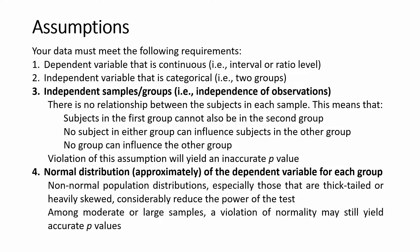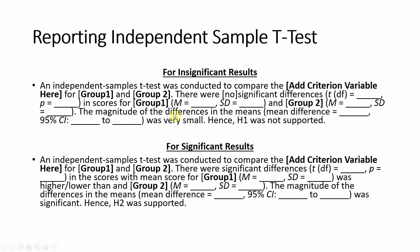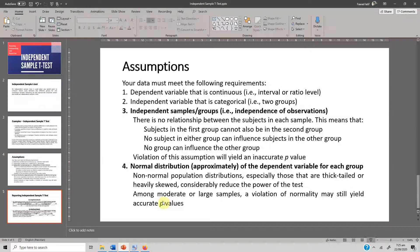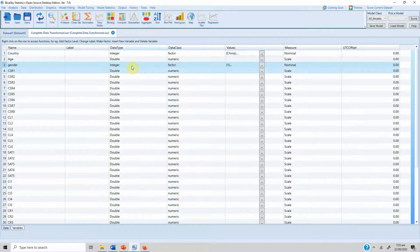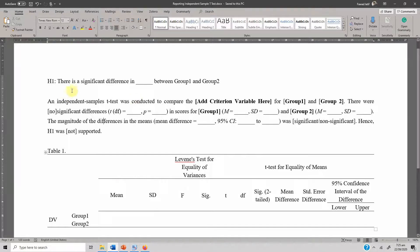Here are a few templates on how to report the independent sample t-test. If you have insignificant results you can use the first template, and if you have significant results you can use the second template. Now let's run an independent sample t-test using Blue Sky Statistics.